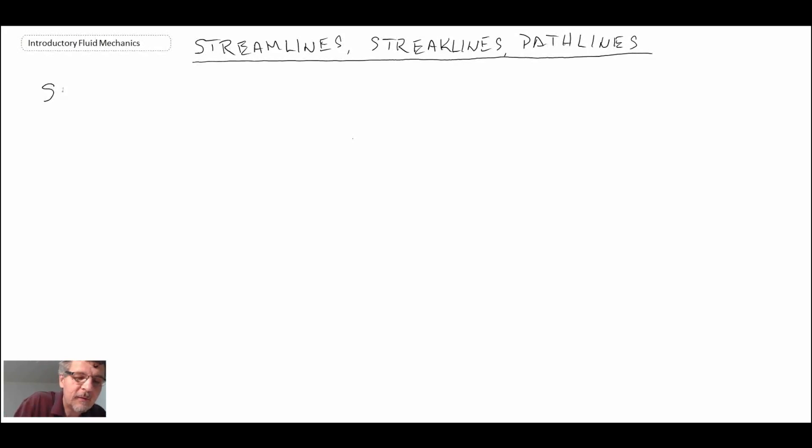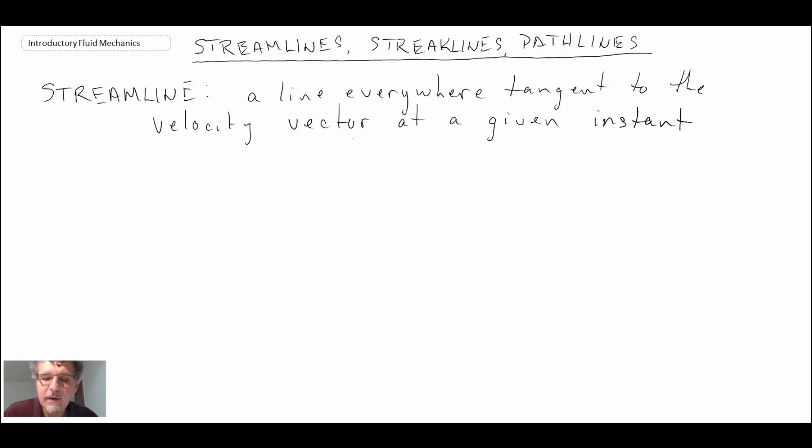So we'll begin with streamlines. A streamline is a line that is everywhere tangent to the velocity vector at a given instance. What I'm going to do is use an airfoil to demonstrate this. So let's draw out an airfoil, and I'll place a streamline on here that comes up and over.